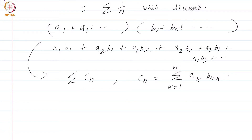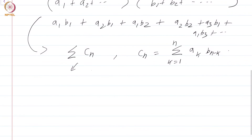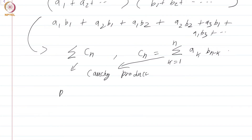So each cₙ is summation k equals 1 to n of aₖ b_{n−k}. This is a different product than the naive product summation aₙbₙ — this is called the Cauchy product of the two series. The question now arises: does the Cauchy product converge?